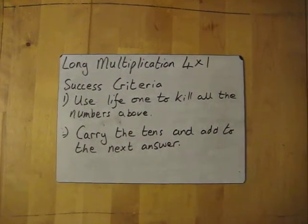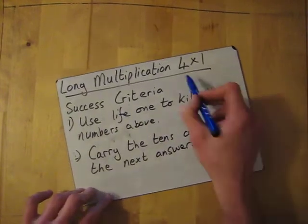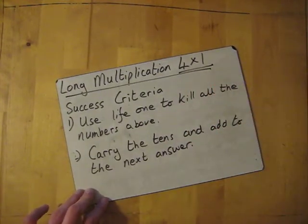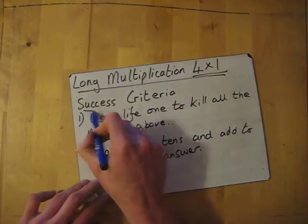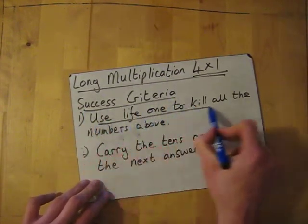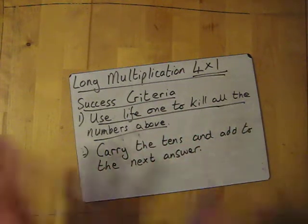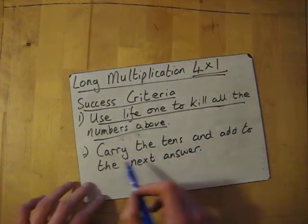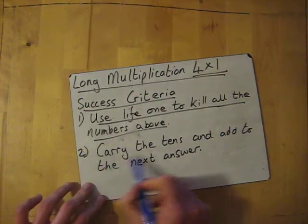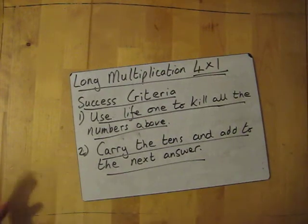Right, long multiplication, 4 by 1 this time. So 4 by 1, same success criteria as 2 by 1 and 3 by 1 really. So success criteria is, use life 1 to kill all the numbers above. That's simple. So hopefully you're starting to get along the lines of what I mean by life 1. Then, to carry the tens and add to the next answer if you need to.